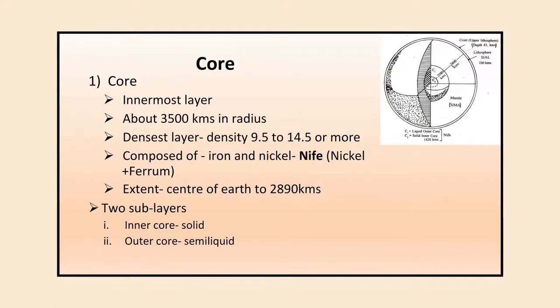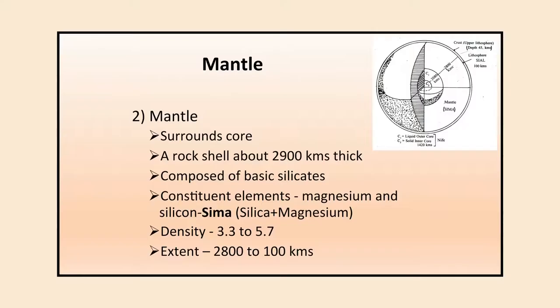The second layer is the mantle. The mantle surrounds the core and is a rock shell about 2900 kilometers thick. It is composed of basic silicates — its constituent elements are magnesium and silicon, making it SiMa. Its density varies between 3.3 to 5.7, and it extends from 2800 kilometers to 100 kilometers from inner to outer side.